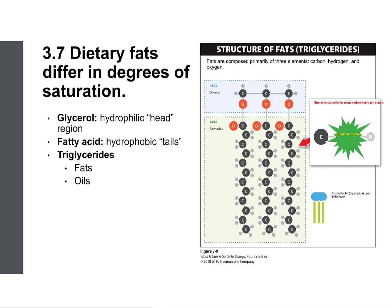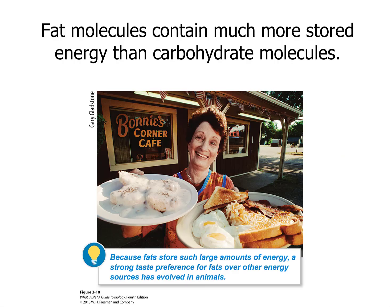Fats and oils — we're going to talk about their difference from a chemistry point of view. There's a strong taste preference for fats over other energy sources — this is evolved. You can see this when they make ice cream; taste testers find that higher fat content is more pleasing. There are receptors on the tongue that through evolution signal that fat is good for long-term storage, so it tastes yummy.